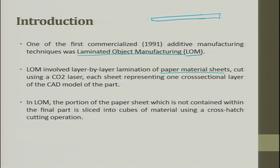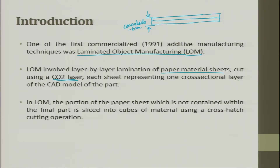You put one sheet, then you place another sheet on top, and make sure these two sheets glue together and form a consolidation. LOM involves layer-by-layer lamination of paper material sheet cut using a CO2 laser. CO2 laser is very important because the wavelength of the laser plays a critical role in laser-matter interaction. Each sheet represents one cross-section layer of the CAD model. The portion of the paper sheet not contained within the final part is sliced into cubes using a cross-hatch cutting operation.